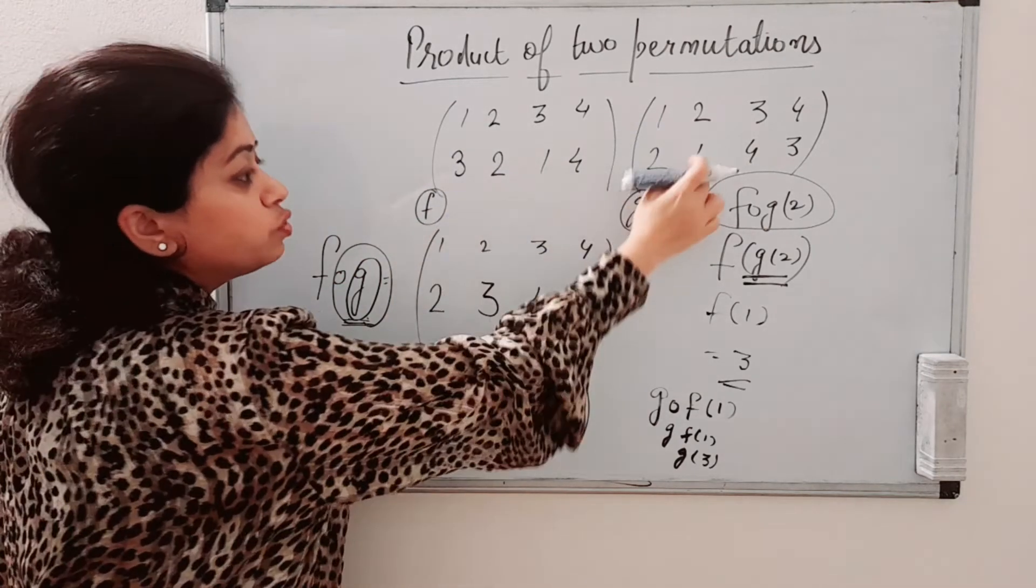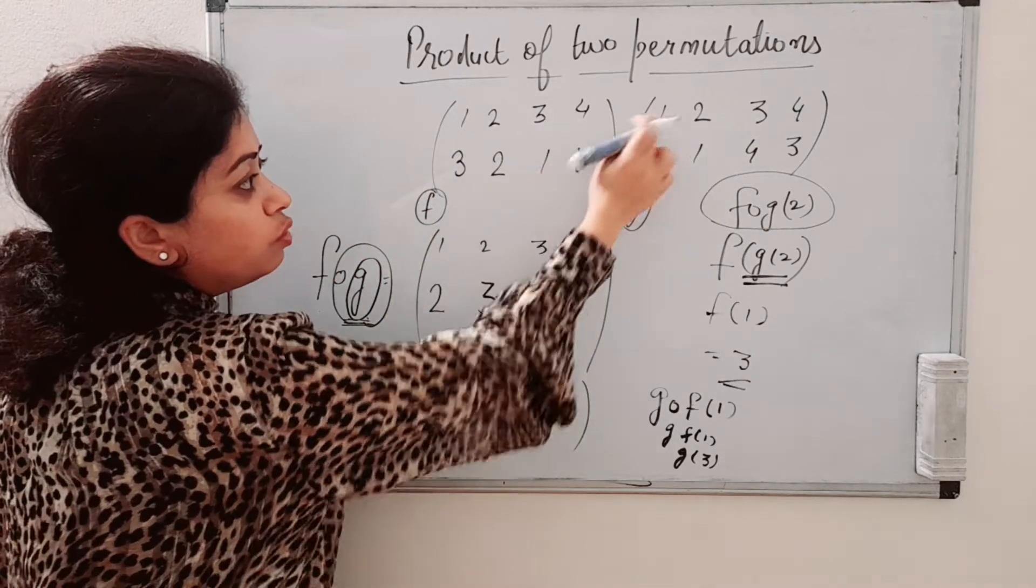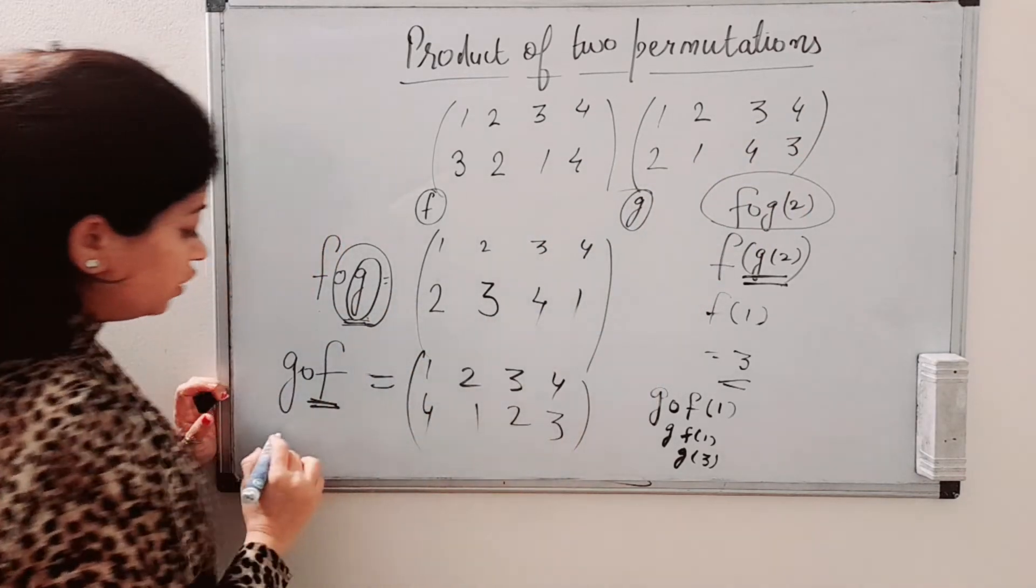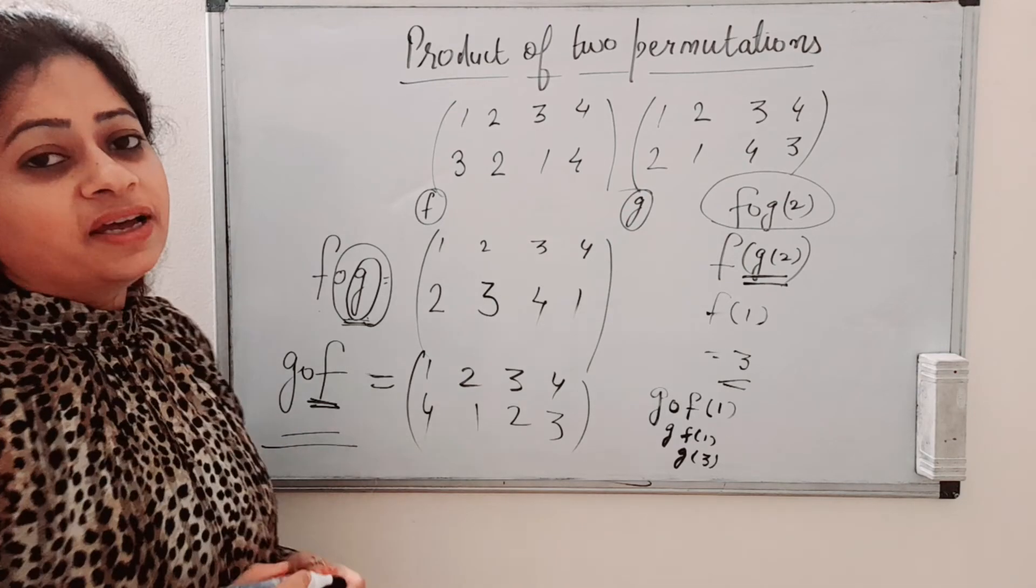2 is 2, 2 is 1. 3 is 1, 1 is 2. 4 is 4, 4 is 3. So this will be G of F. Thank you.